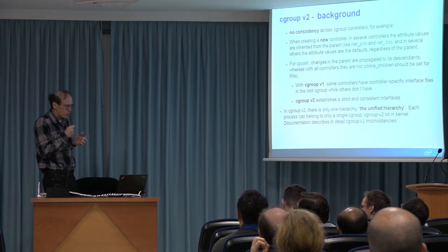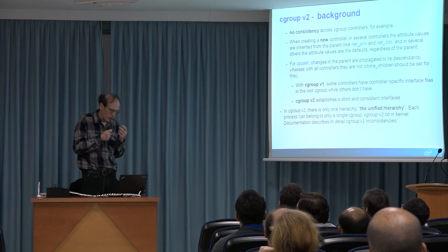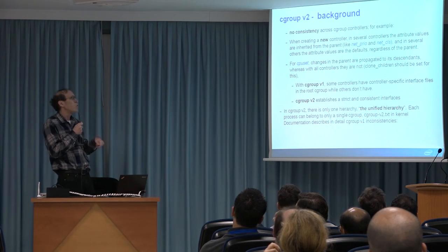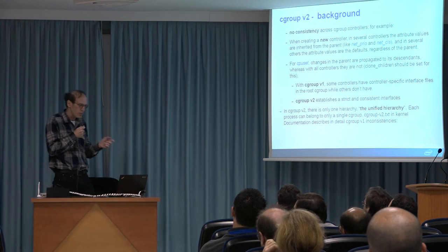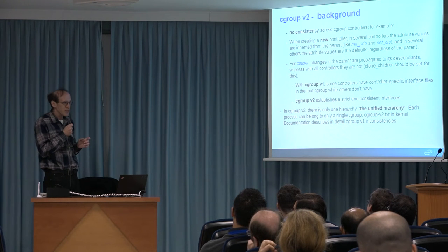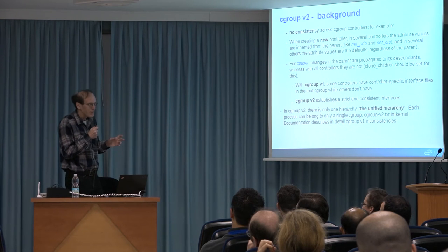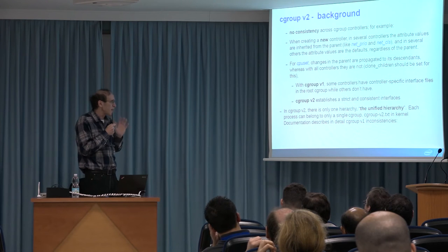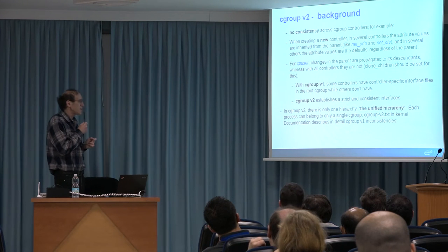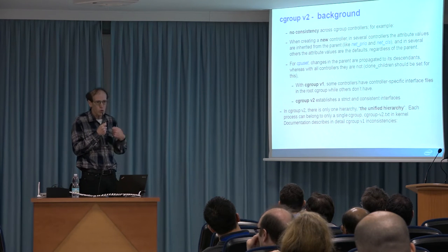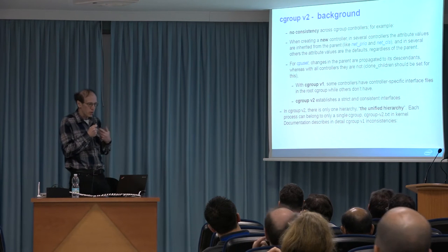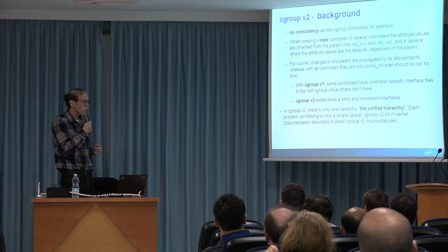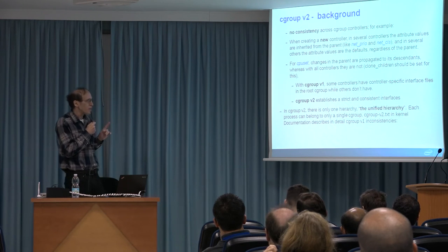What I mean by non-consistency: if you think about populating attributes, there are two types — when you create a new group, and when you change attributes of an existing group. In both cases, the behavior is different for different controllers. Here are some examples with net_prio, net_cls, and cpuset — it's really a lot of mess. Another thing is that with Cgroup V1, a process can belong to more than one group. There is multi-hierarchy, meaning you can mount controllers separately and have multiple Cgroup root objects. In Cgroup V2, there is only one root object, and each process can belong to only one group.